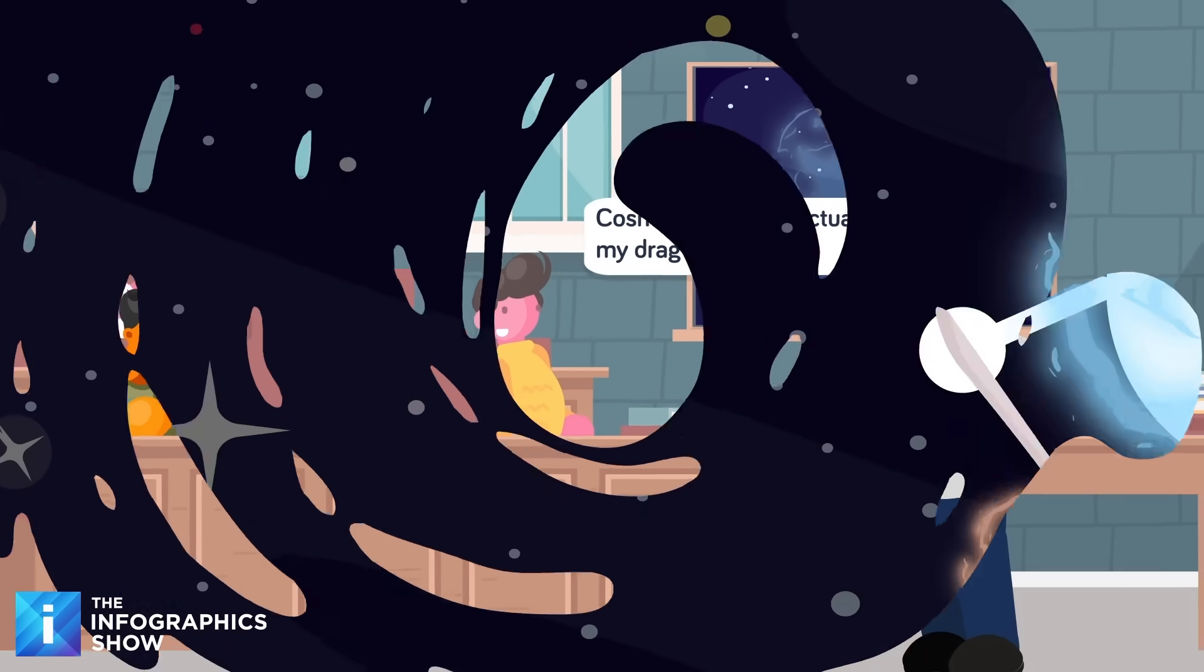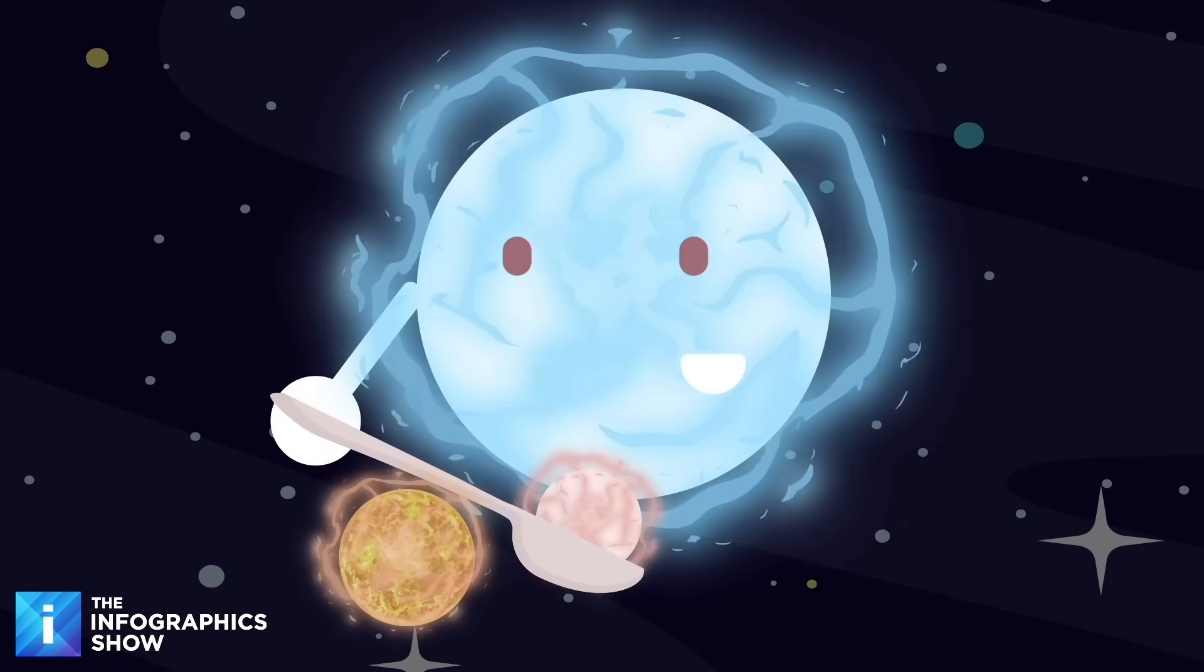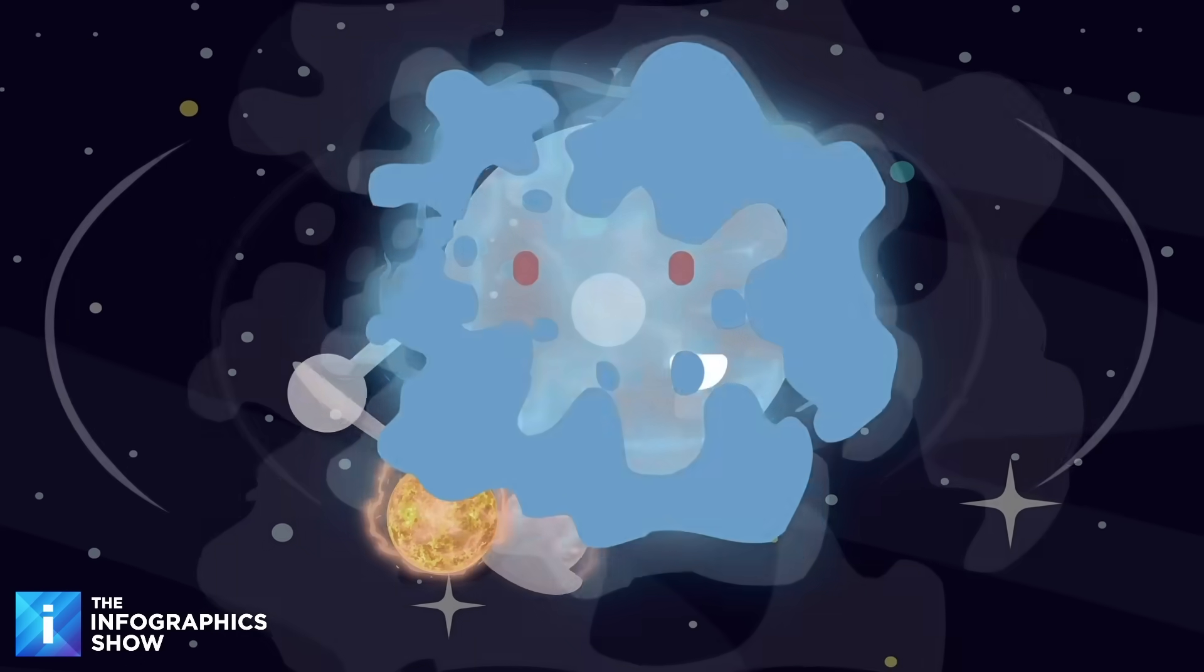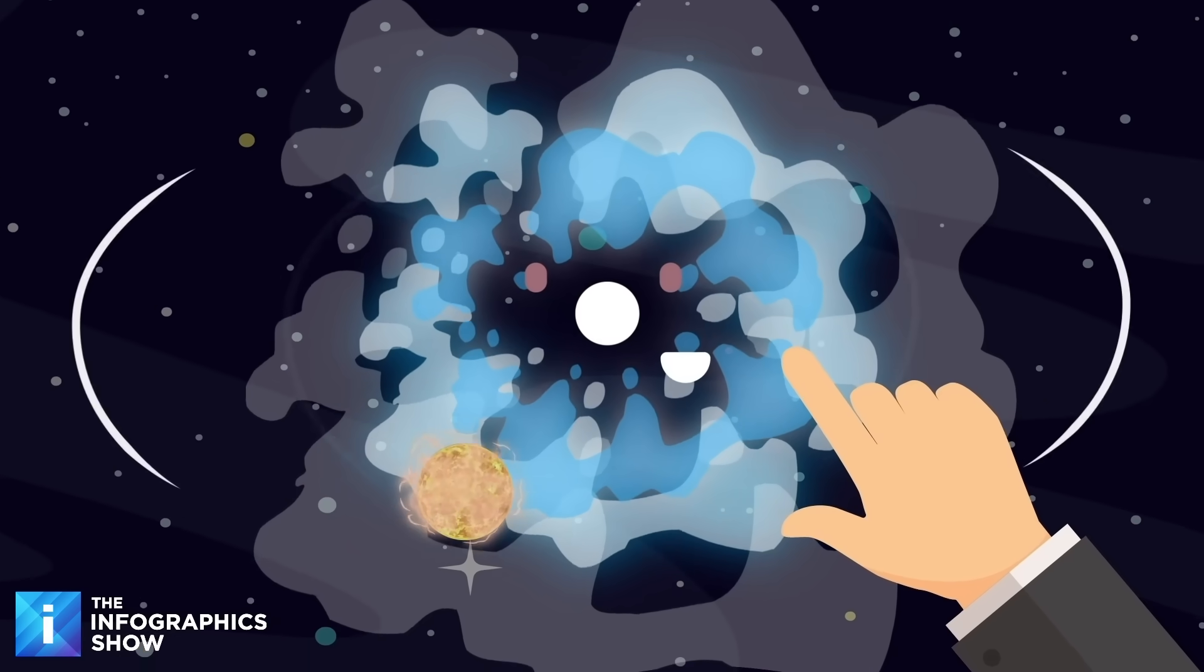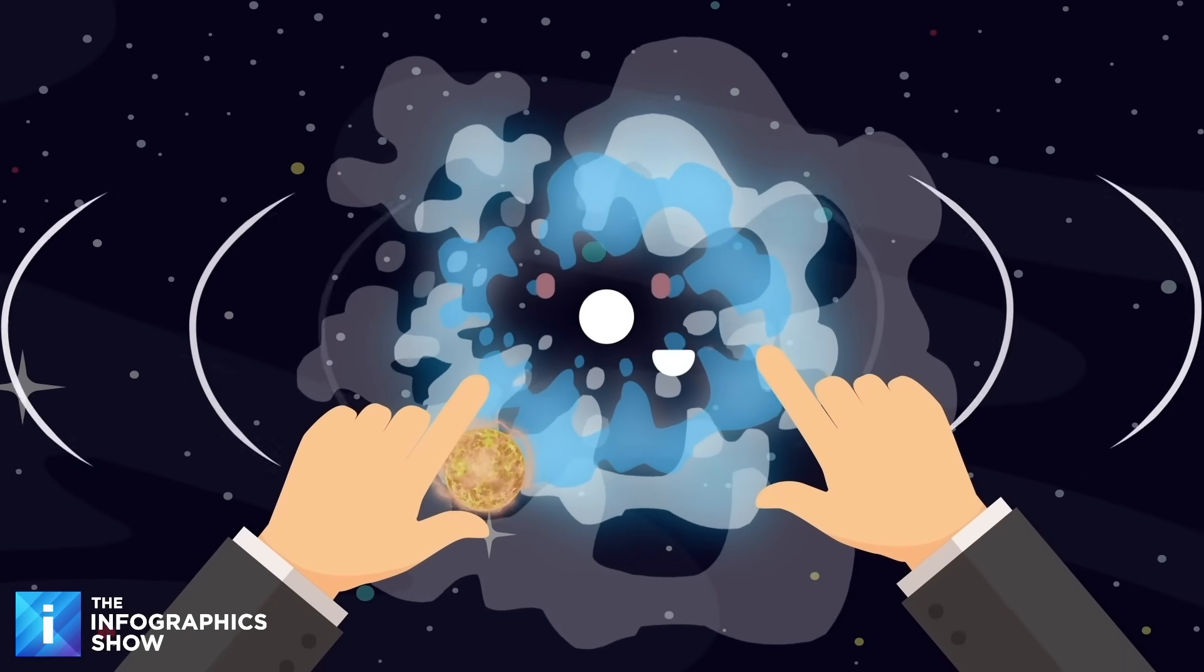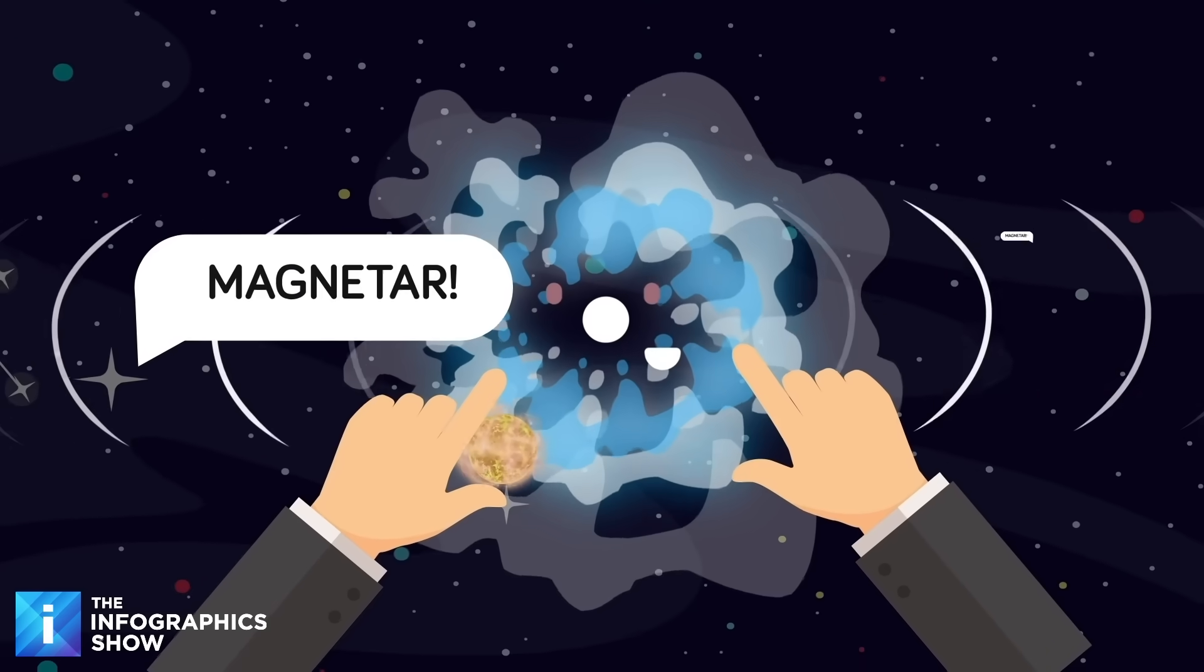But instead of exploding, a white dwarf might just collapse in on itself, skipping the boom, and going straight to neutron star mode. That's called accretion-induced collapse, and in really rare cases, the result isn't just a neutron star, but a magnetar.